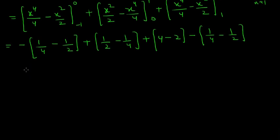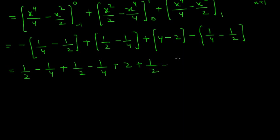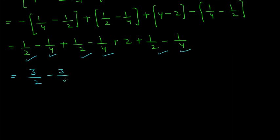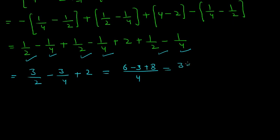Now simplify further. We get: 1 by 2, then minus 1 by 4, plus 1 by 2 minus 1 by 4, plus 4 minus 2 which is 2, plus 1 by 2, plus 1 by 2, minus 1 by 4. Collecting terms: three halves (3 by 2) from the 1/2 terms, minus three quarters (3 by 4) from the 1/4 terms, plus 2. Taking LCM of 4: 6 minus 3 plus 8 equals 11, giving a final answer of 11 by 4.